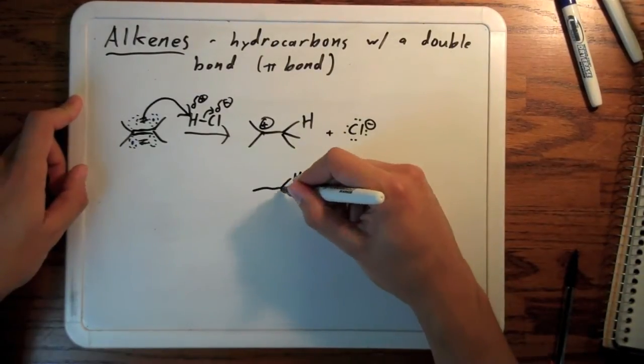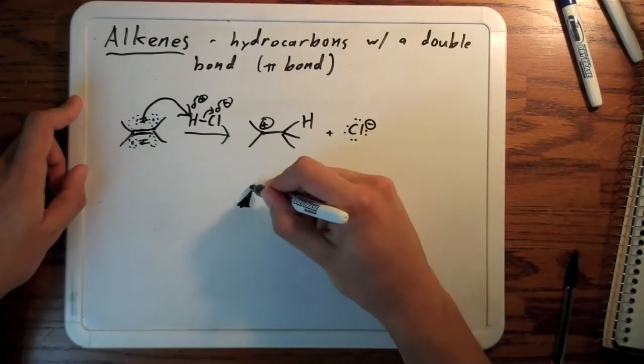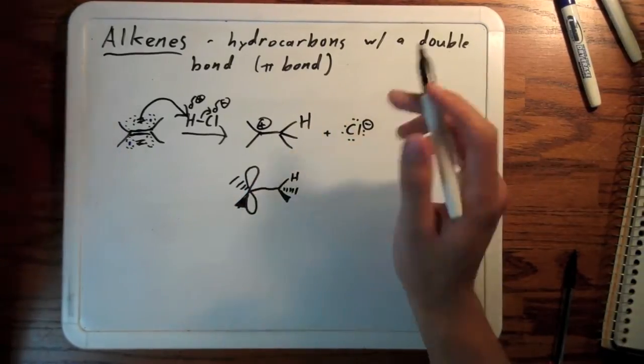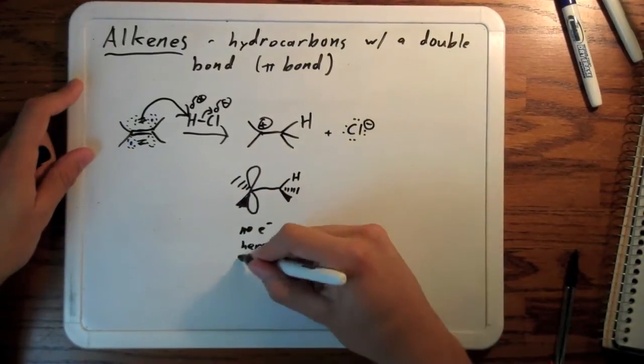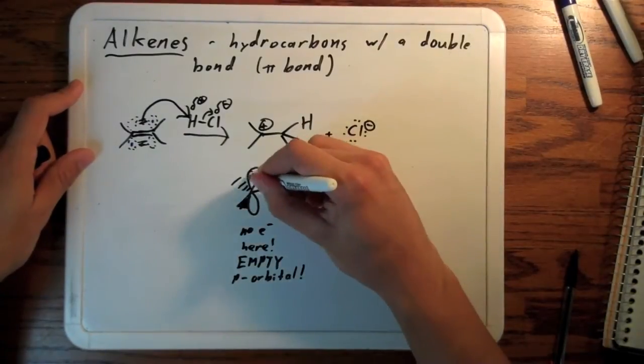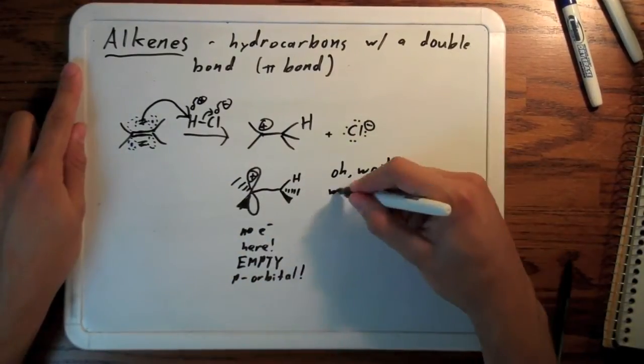Back to this reaction. This is what we have so far. This is our molecule with the hydrogen added. There's an empty p orbital right there. There are no electrons in it. So there's a positive charge. That's weird having a positive charge on a carbon.